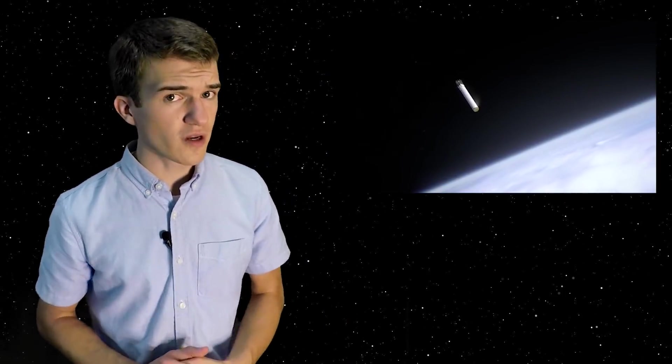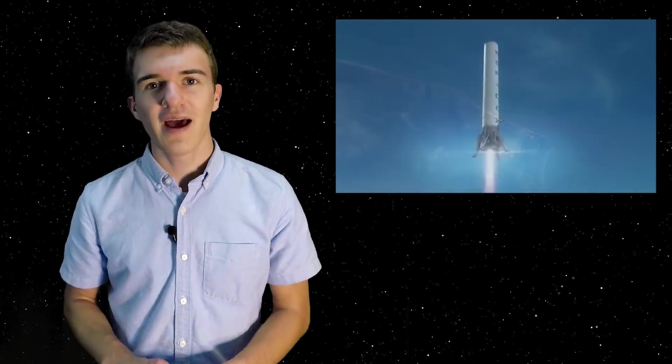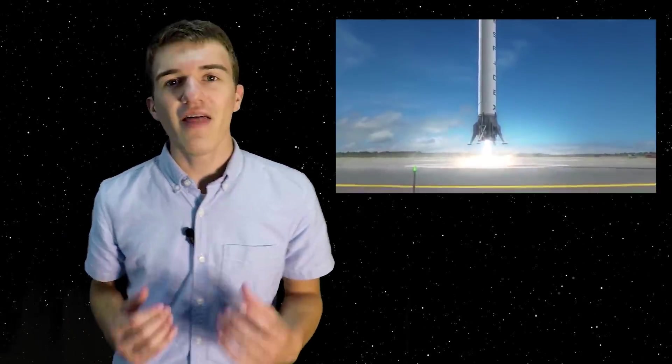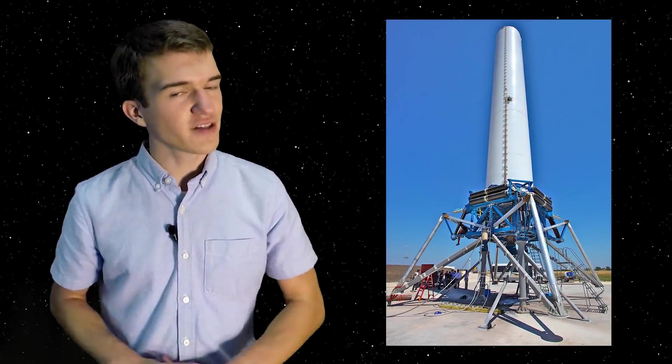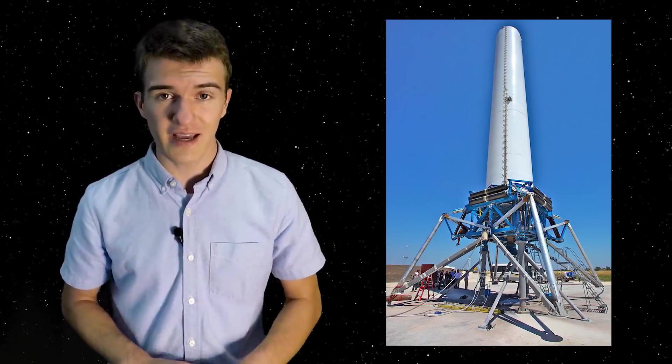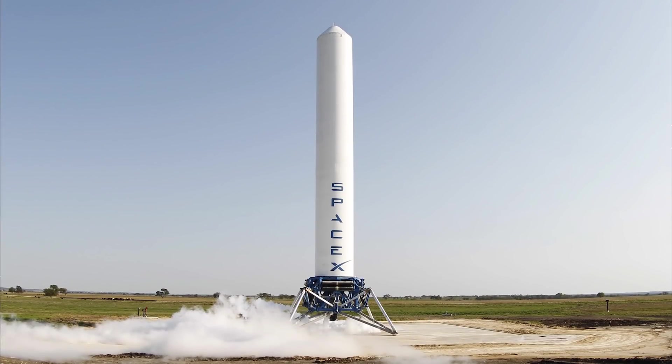So now that we've touched base on some of the other projects SpaceX was working on in 2012, we can talk about their reusability project, actually making steps towards lowering the cost to orbit. And this began with the Grasshopper rocket, a rocket that was never meant to go to space, only consisting of a single Merlin 1D engine with a booster on top of it that was mainly just the rocket fuel tank of a version 1 Falcon 9.